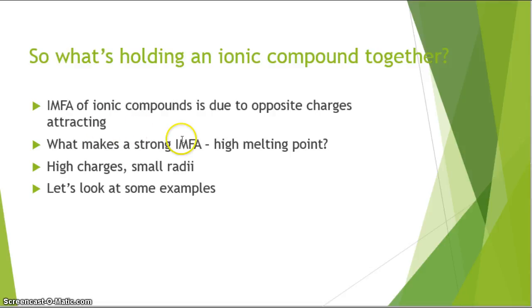So strong IMFAs have high melting points. But what makes a strong IMFA? So if I have an ionic compound that has a really high melting point, it has a really strong IMFA, what is causing that? To have a higher IMFA, you have higher charges like plus two is higher than plus one or plus three is higher than plus two. So high charges, plus twos, plus threes, minus twos, minus threes. And the other thing that helps the strength is the small size of the radii of the atom or the ion in this case.